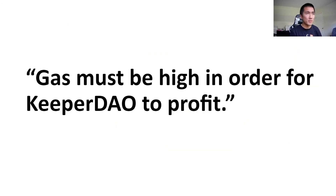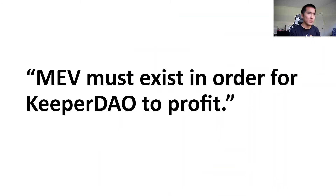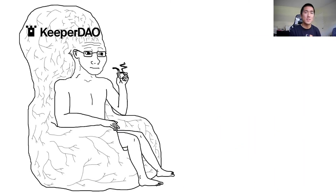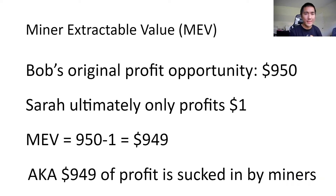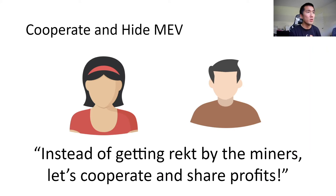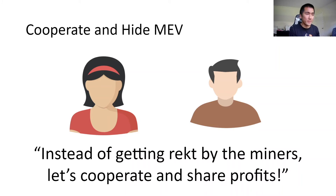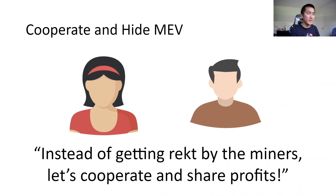A popular misconception is that gas must be high for KeeperDAO to make money. That's not the case — MEV must exist for KeeperDAO to profit. The gigabrains at KeeperDAO are essentially saying, let's hide MEV from miners. Instead of paying $949 to miners and capturing only $1, why don't we cooperate and share profits with each other? Bob can take the first arbitrage opportunity, Sarah can take the second, and they just keep coordinating. In KeeperDAO, keepers can coordinate — you take the first arbitrage, I'll take the second, you take the third — it's a coordination game.